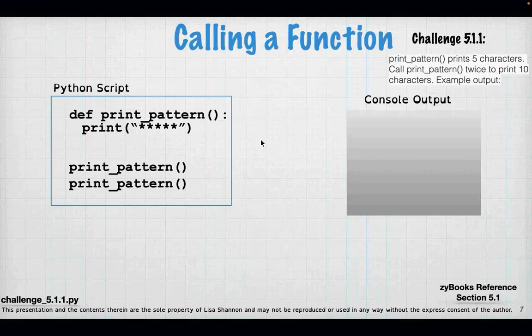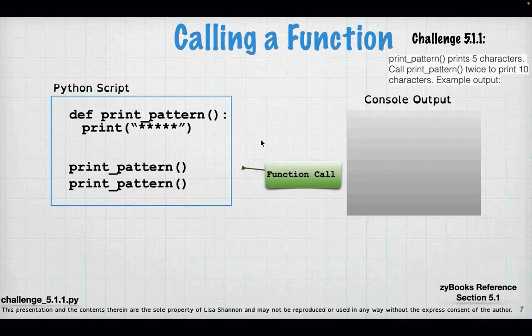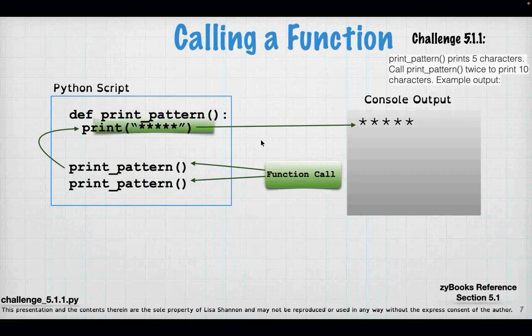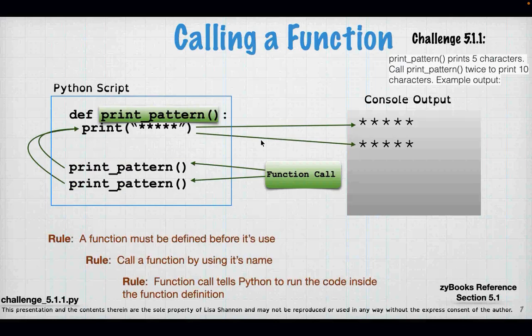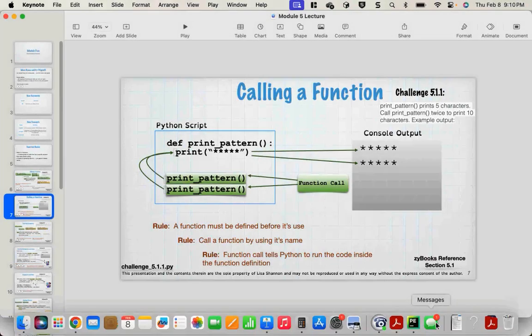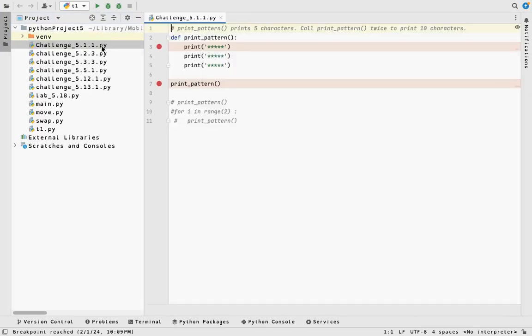Now I showed you how to define it; now I'm going to show you how to call it. There are two parts: the definition, which is stored until you call it. Here we have print_pattern again, and underneath that I have two calls to print_pattern. Those are in the global scope. When I call print_pattern, Python is going to execute the lines of code in print_pattern and output five stars to the console. Since I called print_pattern again, it's going to do the same thing a second time. You must define the function before it's called, and you always call a function by using its name.